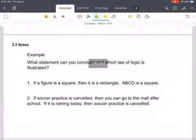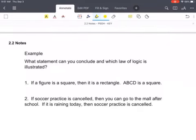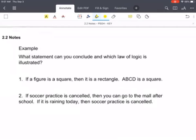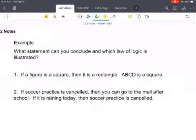So first off, why don't you see if you can come up with the conclusion, and then decide which law it is. First one just says, if a figure is a square, then it is a rectangle. It then tells you that ABCD is a square. Therefore, ABCD is a rectangle.